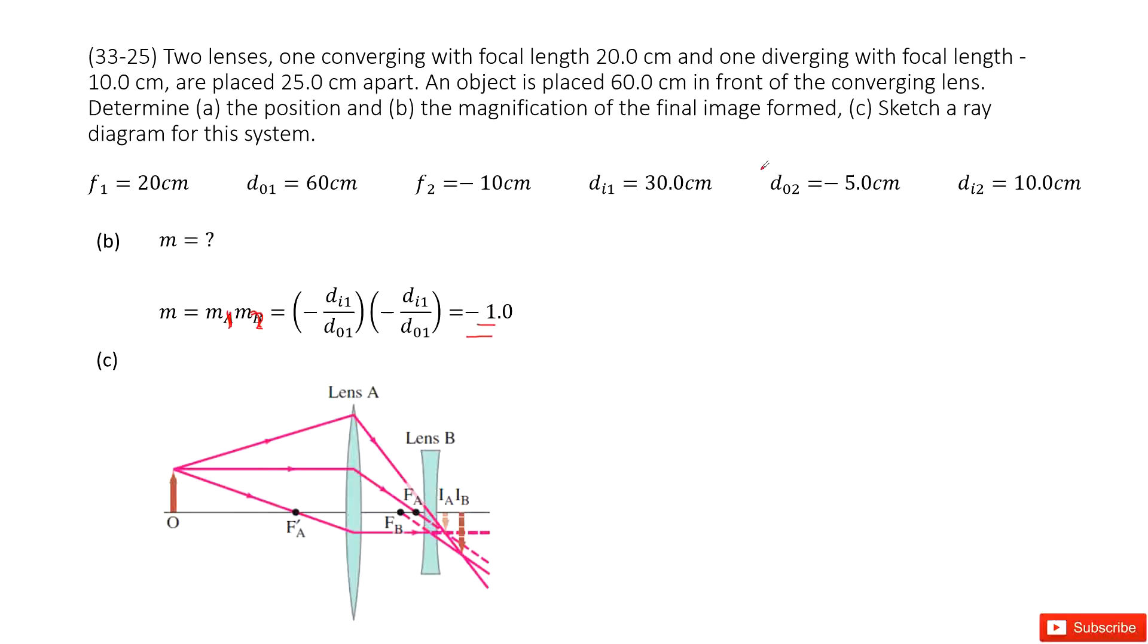The third one asks you to plot a graph for this system. We have lens A and lens B. And as you can see, the object distance as we know is 60 cm. But f1 is 20, so this should be three times larger than f1.